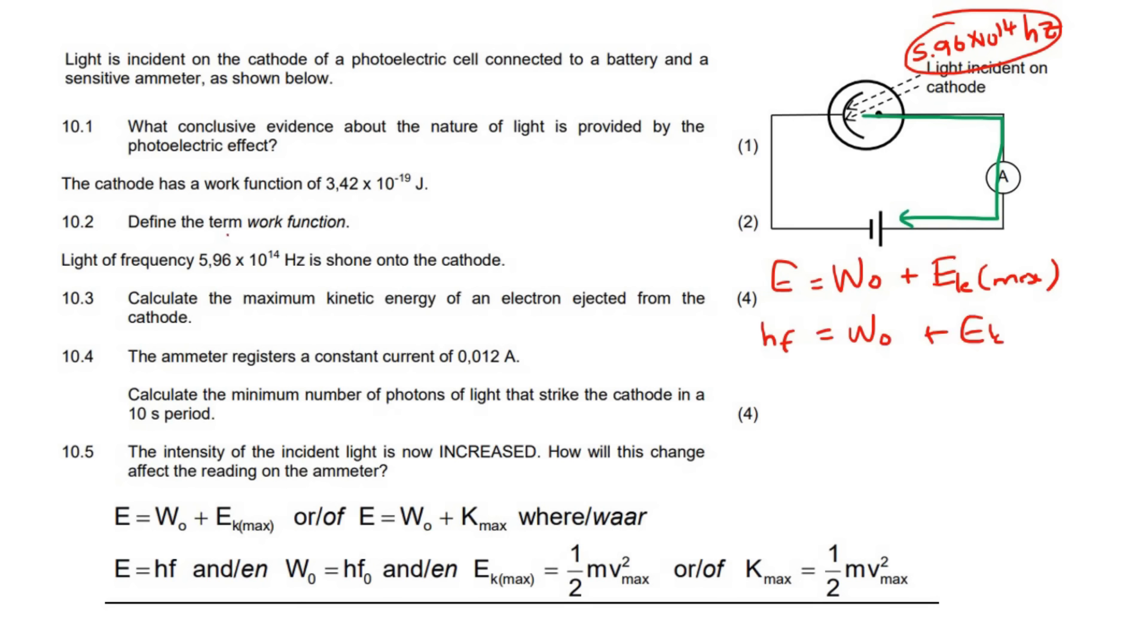We can use Planck's constant now. This is Planck's constant that you get on the formula sheet: 6.63 times 10 to the negative 34. Then the frequency of the light is 5.96 times 10 to the 14. That's equal to the work function, 3.42 times 10 to the negative 19, plus the EK.